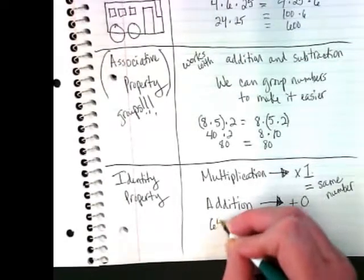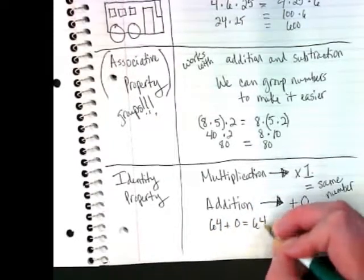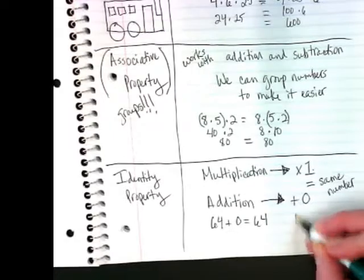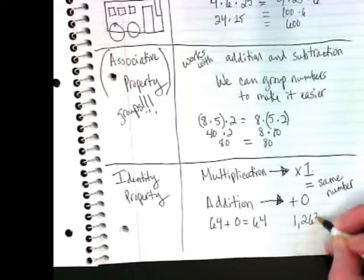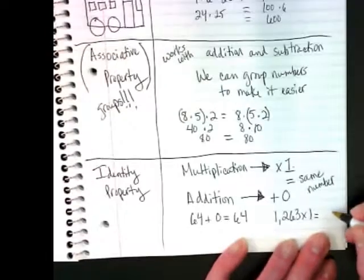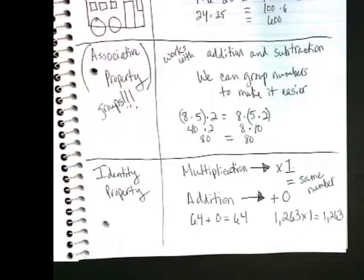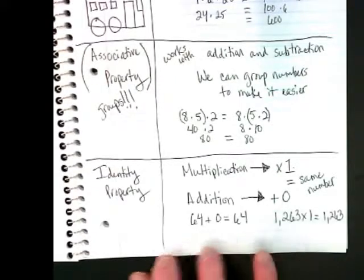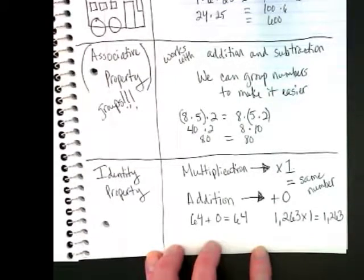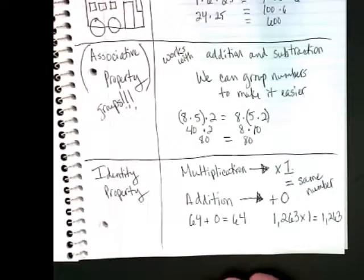An example would be if I did 64 + 0, I'm going to get 64. If I'm going to multiply 1263 × 1, I'm going to get 1263. Point to the poster you think is identity property. Which of these five do you think is for identity?